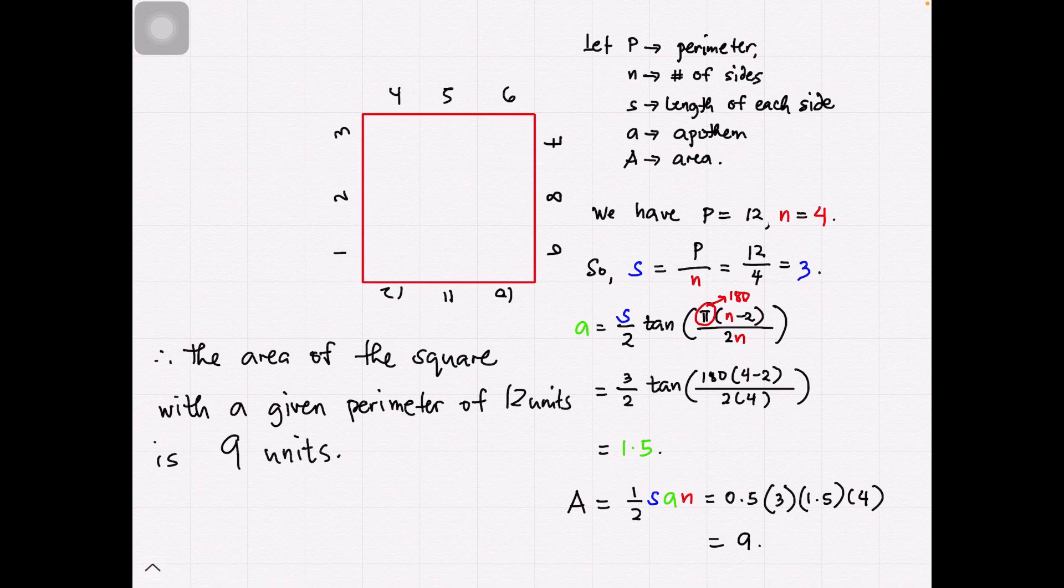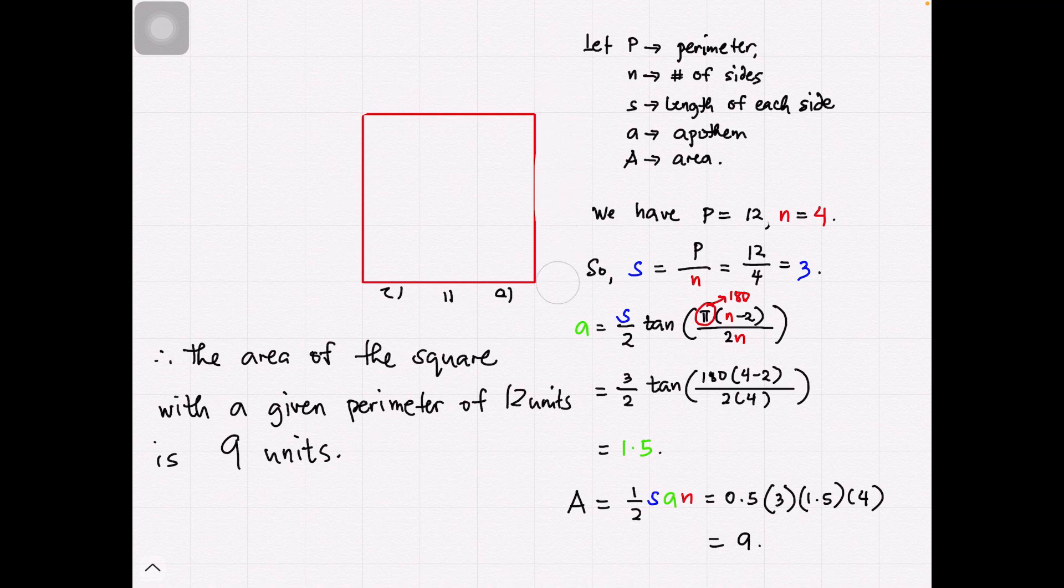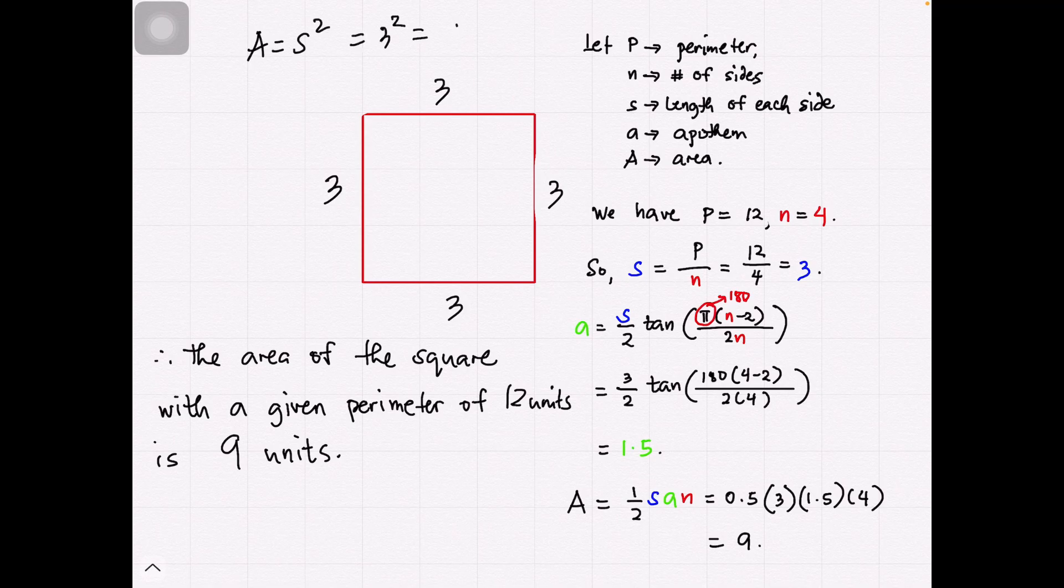We want to check if our answer is correct. Notice that the formula in getting the area of a square would be the square of S. In this case, our S is 3, and so A is equal to square of S, which is 9.